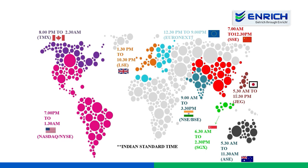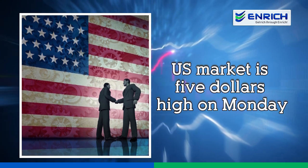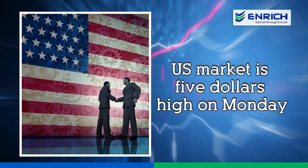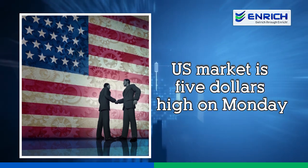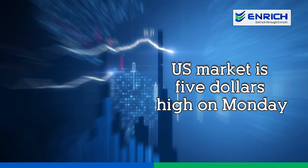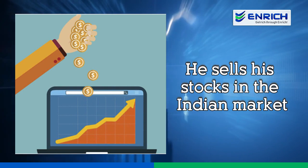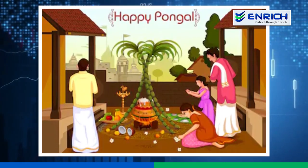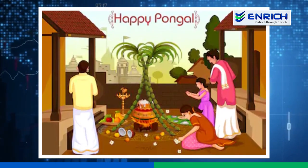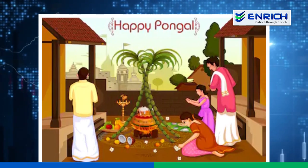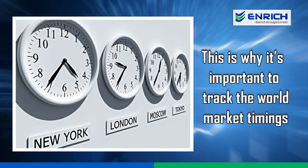Imagine Friday is a holiday in the Indian market. When the market opens on Monday, this trader sells his stocks quickly thinking the market is in a negative trend. Unfortunately, he does not know that the US market is five dollars high. He does not bother to check the fluctuation in the US on Friday. Remember, the holiday is only for India, not for the US. This is why it's important to track world market timings.